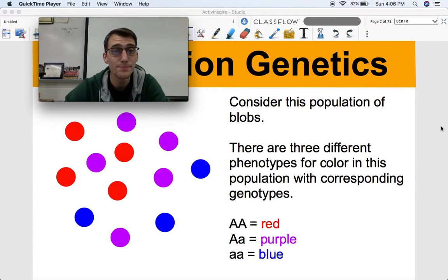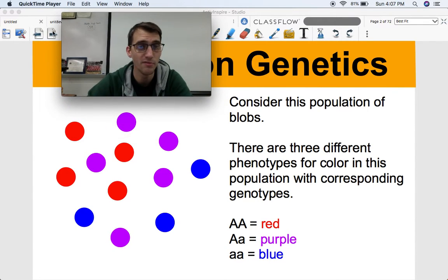So how we're going to talk about this is in the simplest context that I can think of in the terms of a population of blobs. They're blobs. They live on my screen. And they live happily ever after. They're a bunch of organisms. And so in our blob population, there's three different phenotypes for color with these corresponding genotypes. I'm bringing those terms back. We're going back to genetics. This is population genetics after all. We have three different colors, red, purple, and blue. The homozygous dominant individuals are red. The heterozygous individuals are purple. And the homozygous recessive individuals are blue.